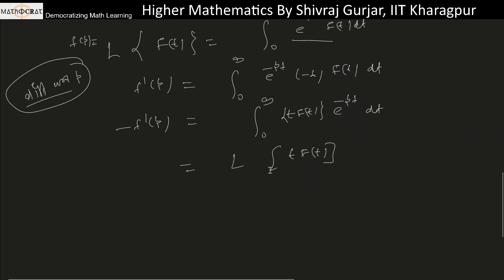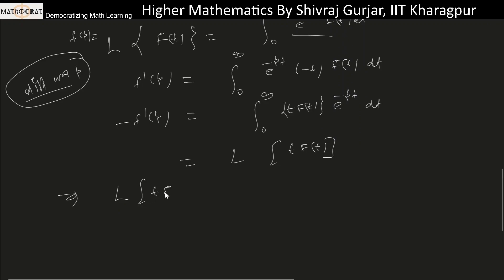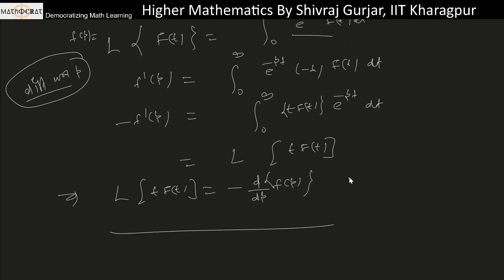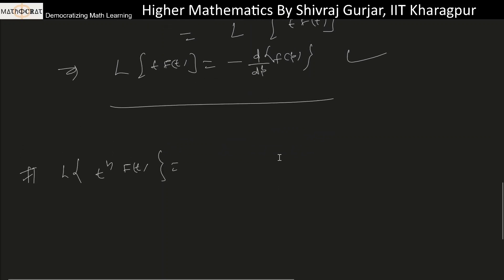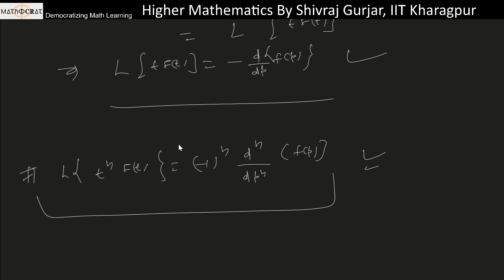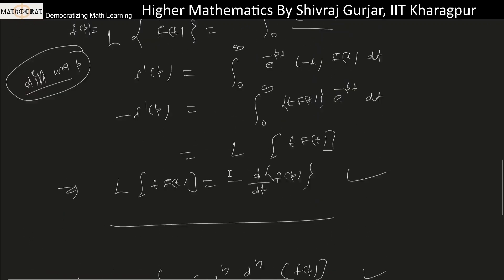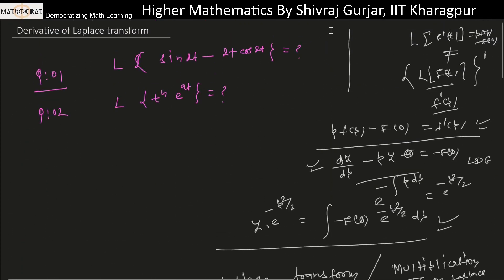This result can be generalized: Laplace of t^n·f(t) equals (−1)^n times the n-th derivative of F(p) with respect to p. For example, for t-squared, it would be the second derivative, and for t-cubed, the third derivative. Let's try some solutions based on this concept.